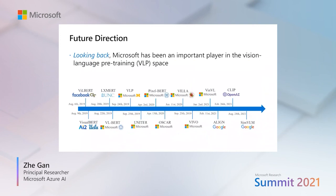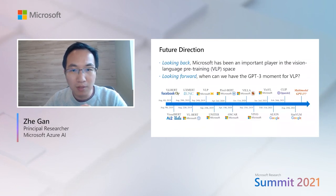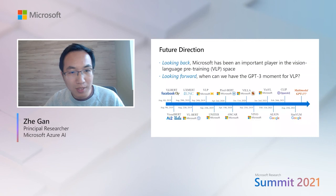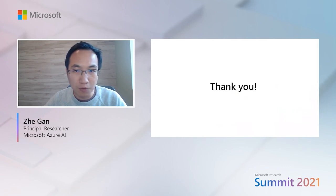Looking back, Microsoft has been a very important player in the vision-language pre-training space, with many exciting works such as Uniter, OSCAR, VLA, WinVR, and others. But looking forward, when can we have the GPT-3 moment for vision-language pre-training models? This is our future direction. I'd like to thank the collaborators, and thank you for your time.